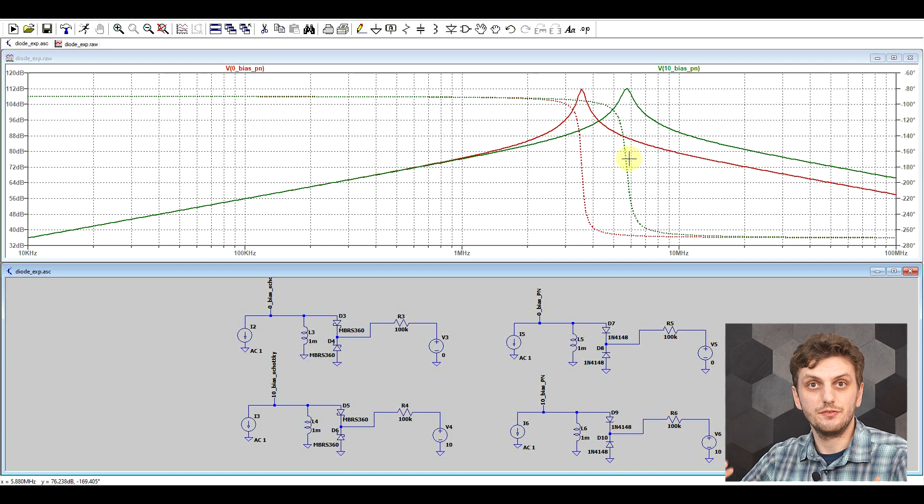So with normal types of diodes, the behavior will exist, but it's not so predictable, and of course you can find varicab diodes in all sorts of values. So you can find them from a few picofarads up to hundreds of picofarads, so you can use them in all sorts of circuits.